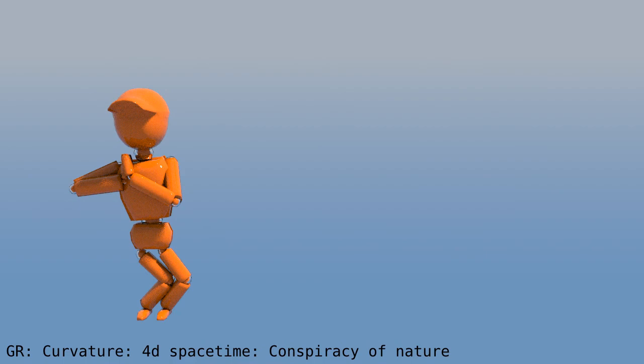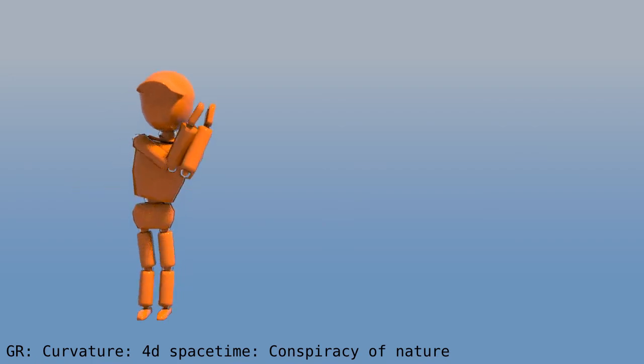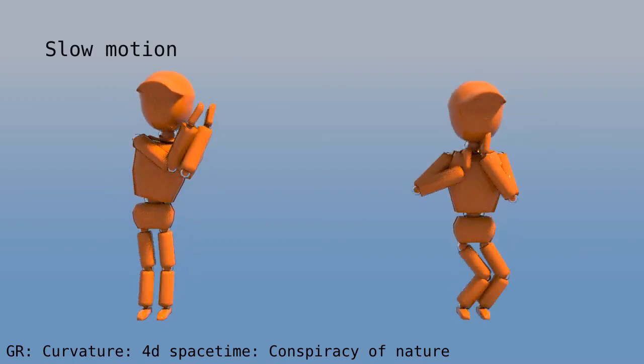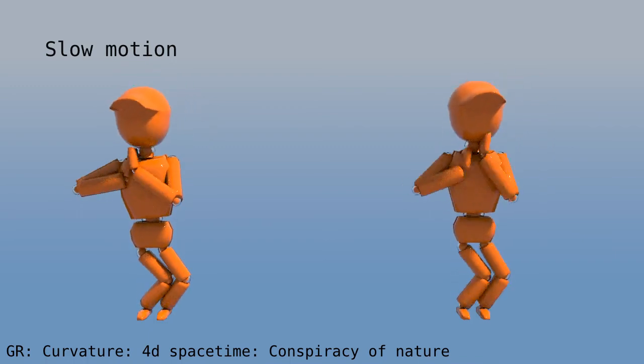Remember Pixel Man? We saw before that if everything doubles in size, you wouldn't notice. It's a kind of conspiracy of nature, that if you and your stick and the things around you all double in size, it cancels out. The same thing happens with time. If everything runs in slow motion, including you, the neurons in your brain, your clock, and the speed of light, you wouldn't notice. Again, we have that conspiracy of nature, where things cancel out locally.